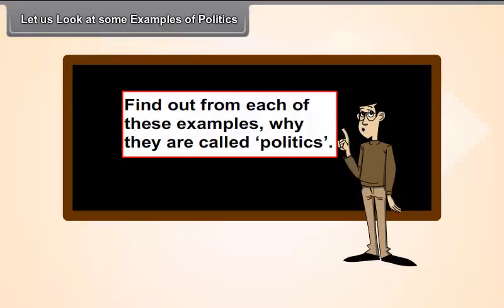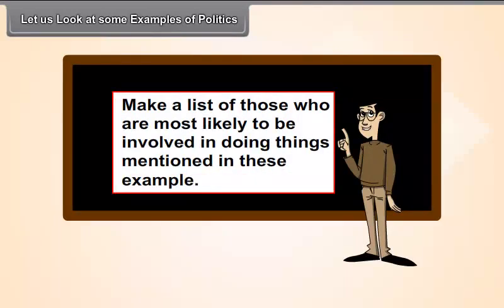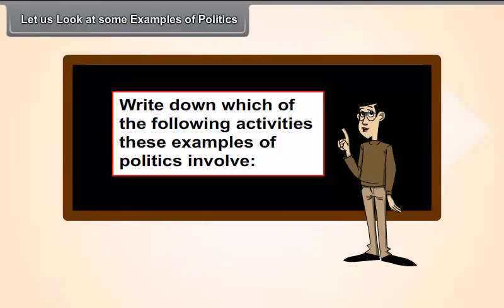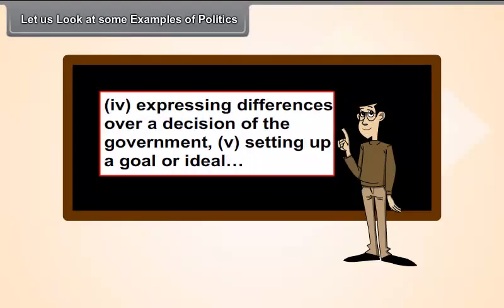Activity: Find out from each of these examples why they are called politics. List out the actors involved and write down which of the following activities these examples involve: deciding policies, running routine government, competing for power, expressing differences over a government decision, or setting up a goal or ideal.